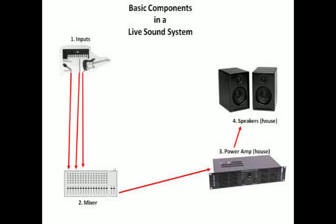Here are the four components of every live sound system you'll ever work on. The first are the inputs, which are typically a microphone, maybe instruments that the band's using — keyboard, drums, guitars, something like that. Those are connected by wires to the mixer, which is the second component. It takes those individual channels, mixes the sound together, and then spits out one single output at a low-level voltage fed over to a power amp.